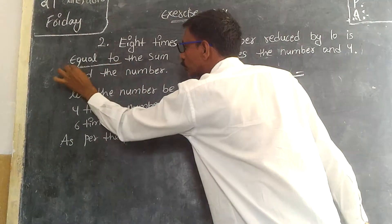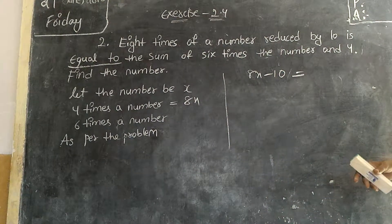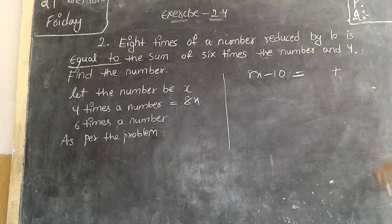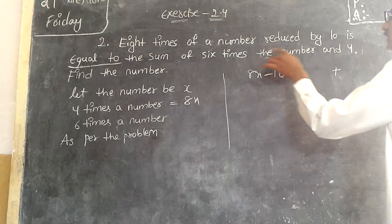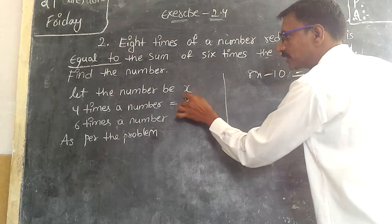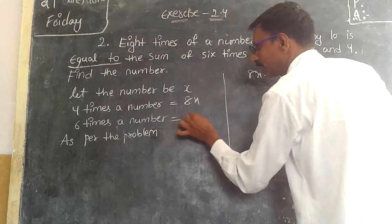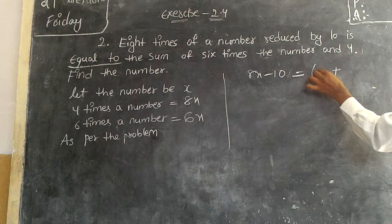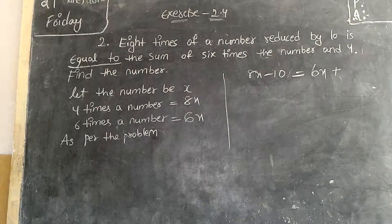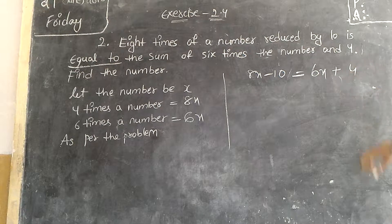Is equal to the sum of. Sum of means what? Plus. Six times the number. Six times this number? 6x. Can I write it as 6x? And 4 means? Plus 4.